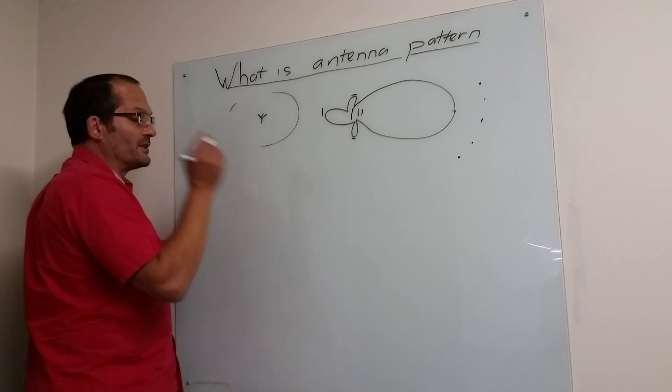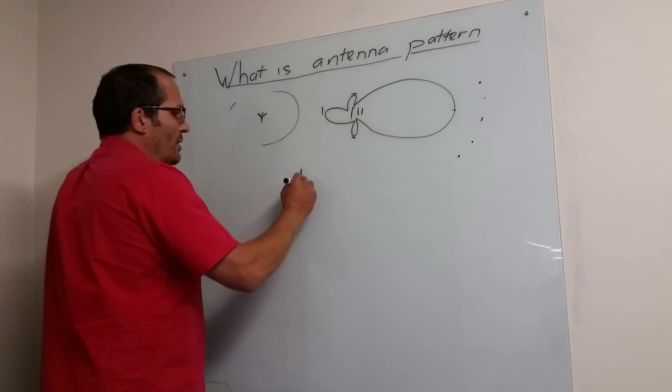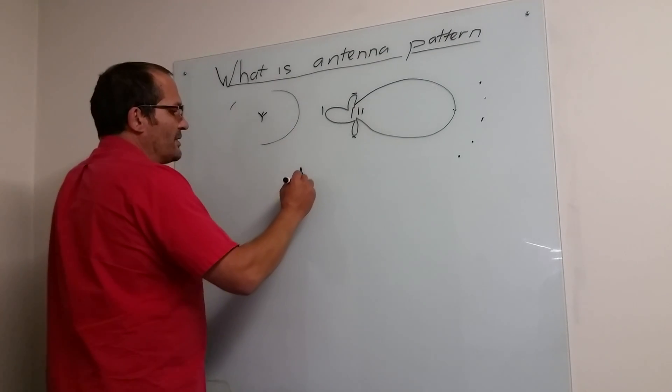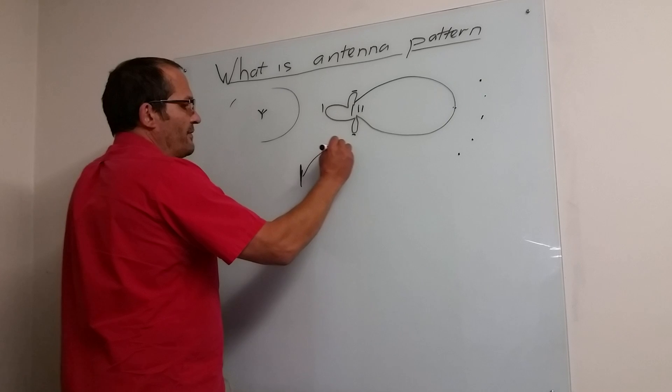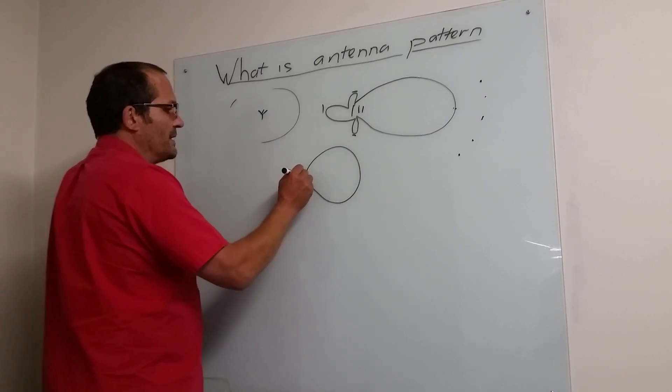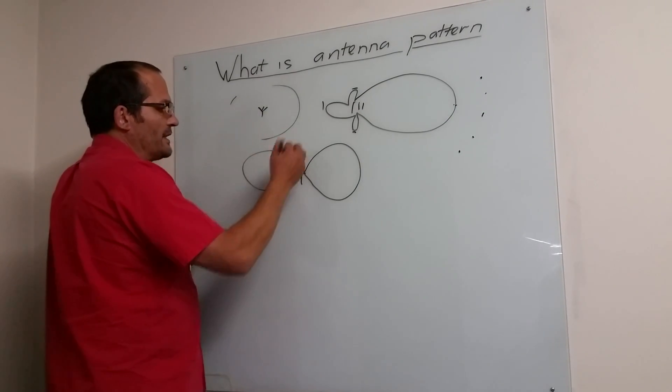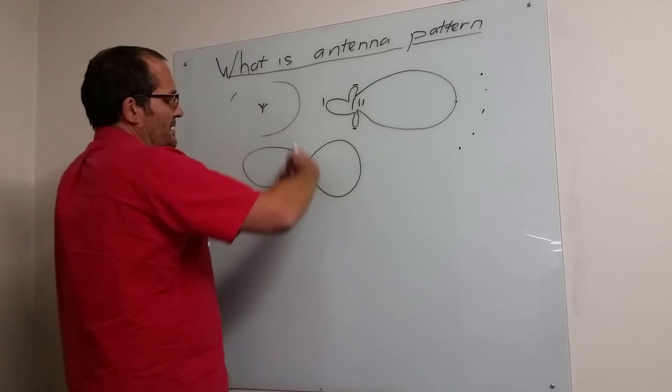If we now look at omni antennas, what's known as omni, if you look at a small omni, it's actually got a pattern, which typically is a fat bubble this way, and a fat bubble this way when you cut it through from the top. So this is a side view.